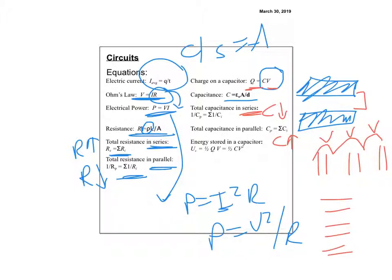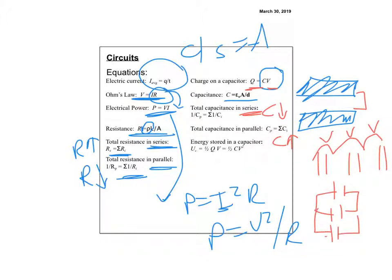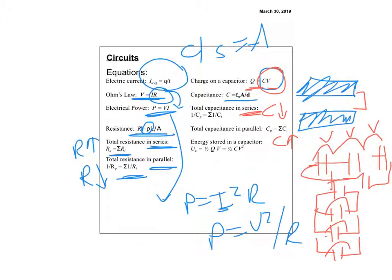In parallel, the battery connects all capacitors and voltage is the same across each. Since Q = CV, you end up adding all the charges — more capacitance than in series. Energy stored in a capacitor is one-half CV² — just like one-half mv². You can also write it as one-half QV. Both forms are on the equation sheet.